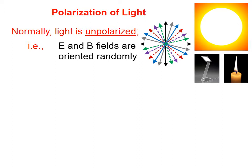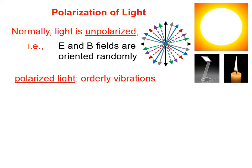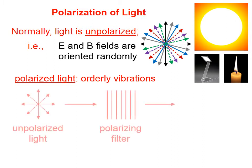Some particles are wiggling up and down, some left and right, some front and back. So the light that they emit is also oriented randomly, and we call that unpolarized light.